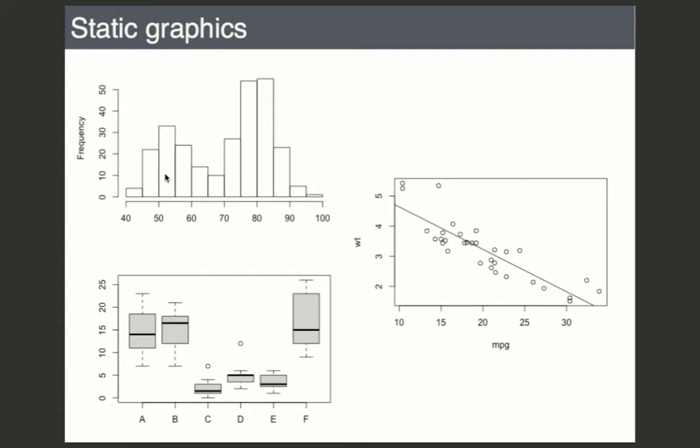So up here we have a histogram created by the hist function. Here we have a scatter plot created by the plot function with a linear regression line added as well. And then over here we have a box plot.